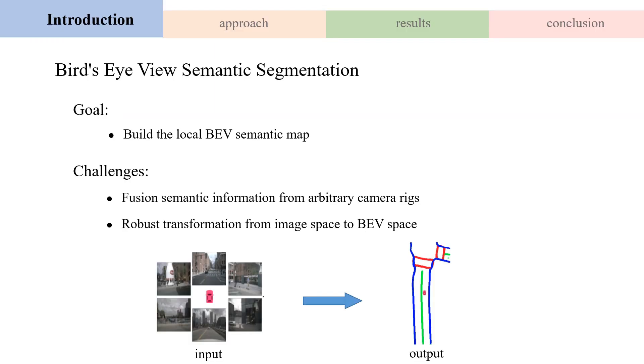The goal of BEV semantic segmentation is to build the local BEV semantic map. It is critical in autonomous driving and robot navigation systems. How to fuse semantic information from arbitrary camera rigs and robustly complete the transformation from image space to BEV space has become a challenge for the BEV segmentation task.